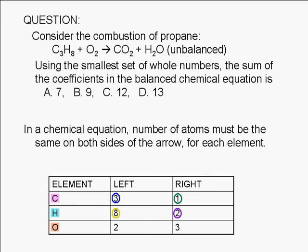For oxygen, we find two atoms on the reactant side and three atoms on the right side: two oxygen atoms from CO2 and one from H2O. We can see that none of the three elements are balanced.